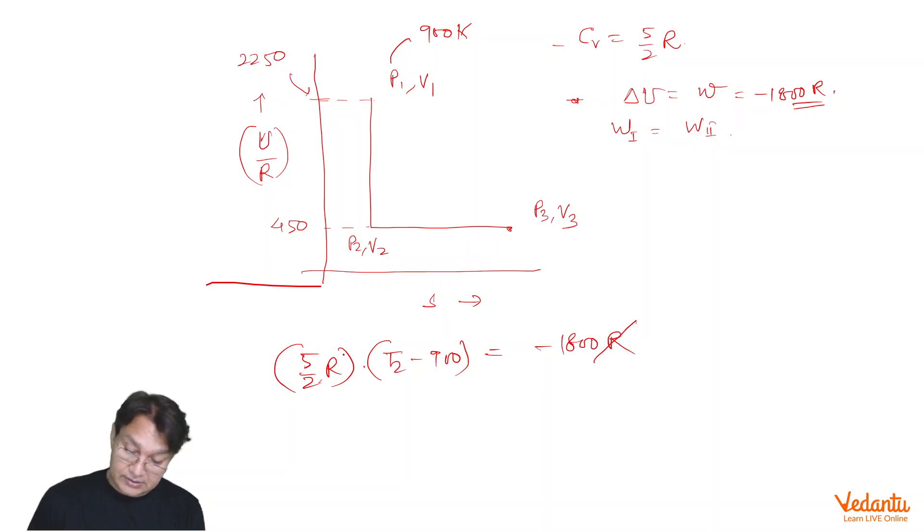R is cancelled. And we are left with T2 minus 900 equals 3600 upon 5 with a negative sign. That equals minus 720. That gives T2 equals 180 Kelvin. So that means temperature here is 180 Kelvin.